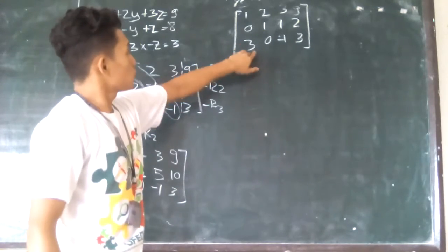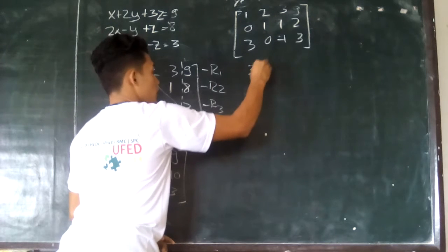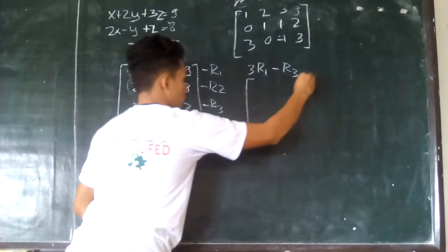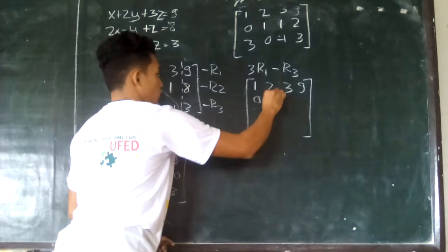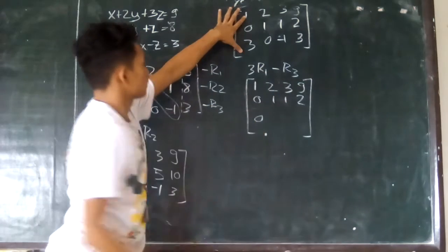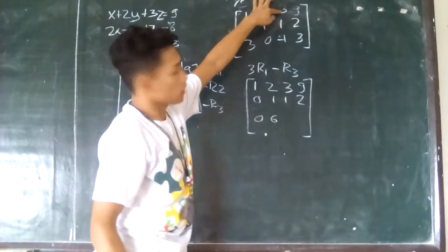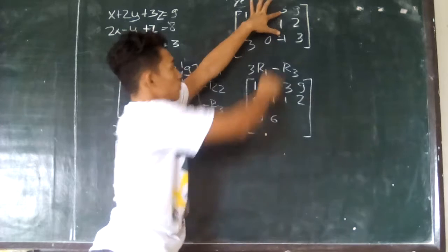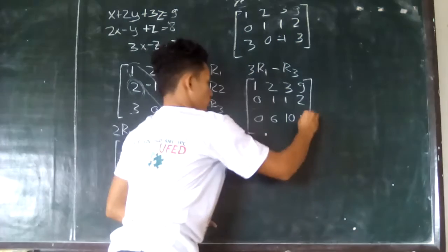This pivot is already 1. Now to eliminate the 3 in row 3, we use 3 times row 1 minus row 3. Copy row 1: 1, 2, 3, and 9. Copy row 2: 0, 1, 1, 2. Then 3 times 1 minus 3 is 0. 3 times 2 is 6 minus 0 is 6. 3 times 3 is 9 minus negative 1 becomes positive 10. 3 times 9 is 27 minus 3 is 24.